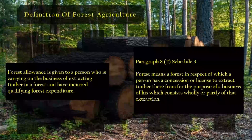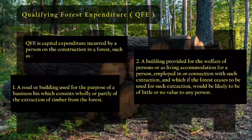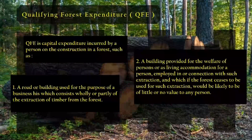Forest Allowance. Definition: forest allowance is given to a person carrying on the business of extracting timber in a forest who has incurred qualifying forest expenditure. Paragraph 8(2), Schedule 3. Forest means a forest in respect of which a person has a concession or license to extract timber therefrom for the purpose of a business which consists wholly or partly of that extraction. Qualifying Forest Expenditure (QFE) is capital expenditure incurred on the construction in a forest of: a road or building used for the purpose of such business; a building provided for the welfare of persons or as living accommodation for persons employed in connection with such extraction; and which, if the forest ceases to be used for such extraction, would be likely to be of little or no value to any person.